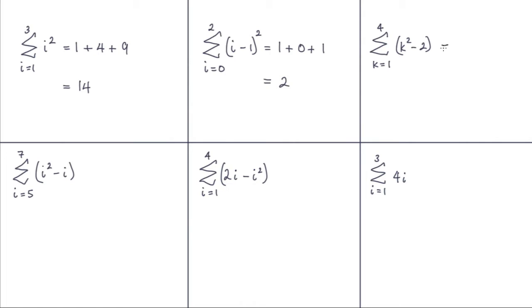Third example. Now you can see in this third example I've actually changed this index letter to K. So we can use any letter we wish. And you will find some books using I. Some will use K. Some will use different letters. It doesn't matter. This time our little rule is to square K and then subtract 2. So 1 squared is 1. Take away 2 gives us negative 1.